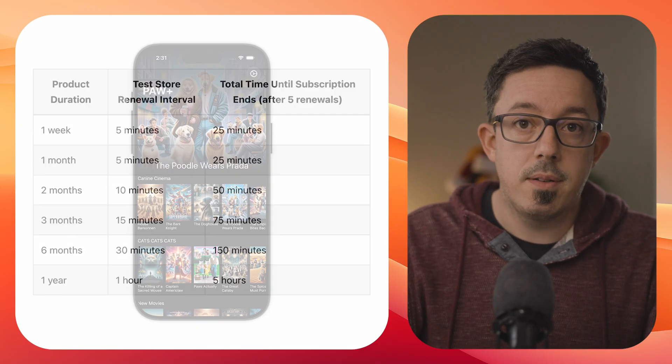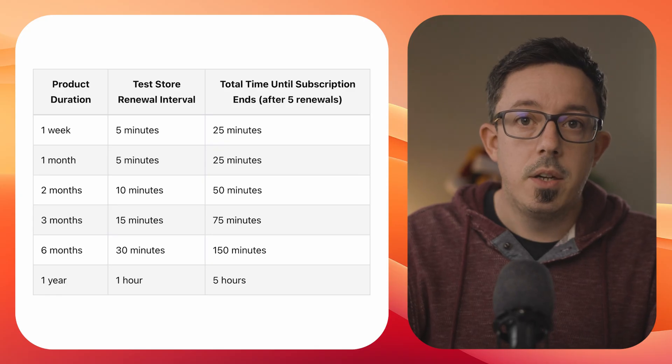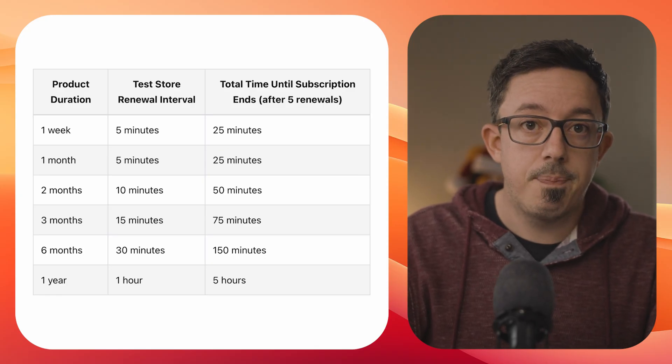TestStore subscriptions expire on an accelerated timeline to make testing easier. You can find all these details in our TestStore docs. TestStore is also useful for automated UI testing, using the dialog to simulate success, failure, or cancel responses from a purchase. And you can easily switch between the real store for production builds and the TestStore for your tests by changing which API key is used in your RevenueCat initialization.